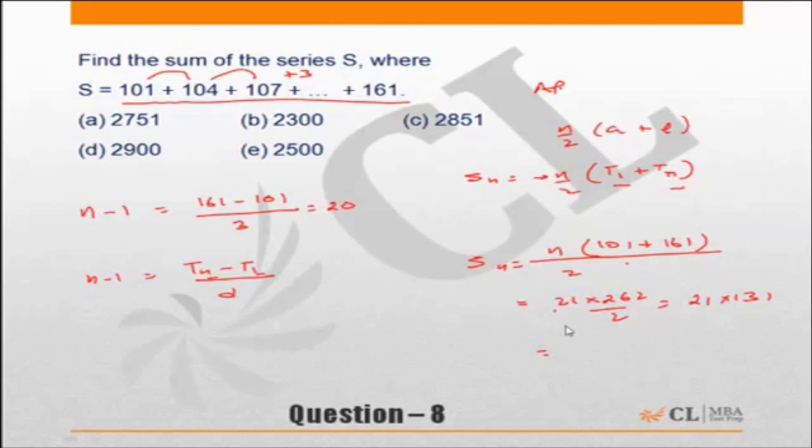However, as a process you could also remember, even if you don't have the number of terms or rather even before calculating that, you could have looked at eliminating the options. You would have said okay, this is 161 plus 101. My answer has to be n into 101 plus 161 by 2, or it has to be n into 131. My answer should be a multiple of 131.